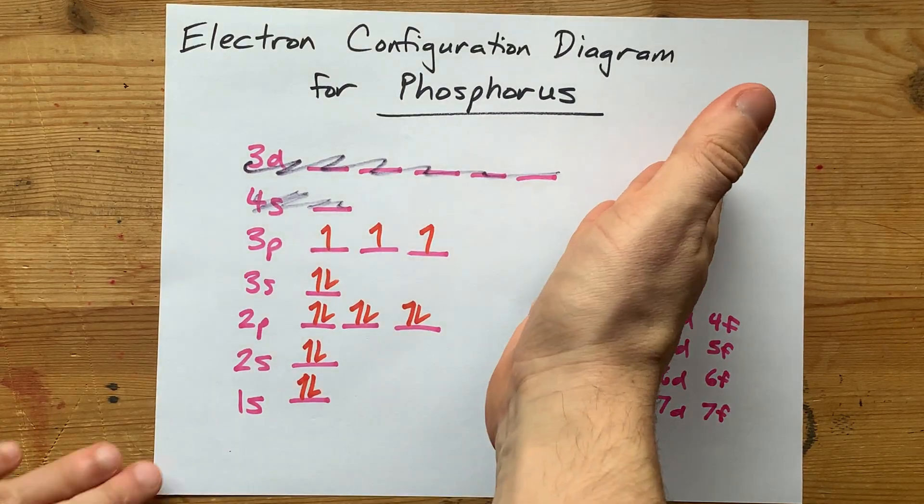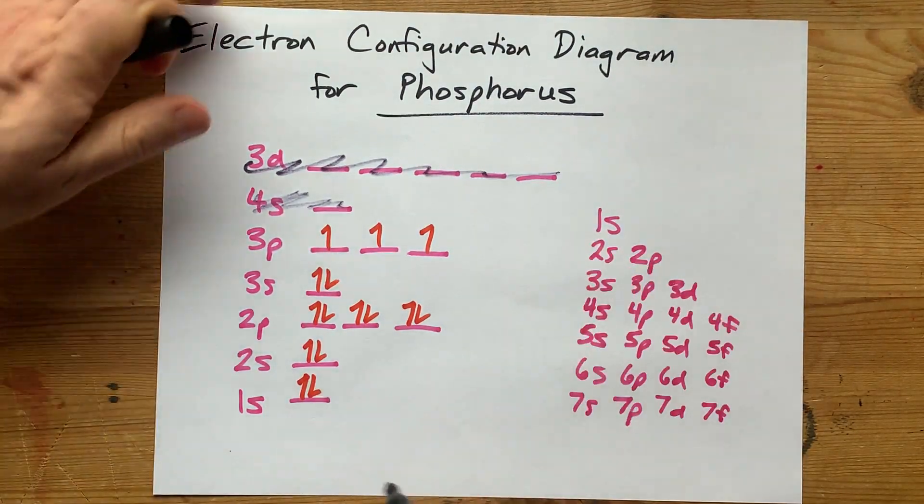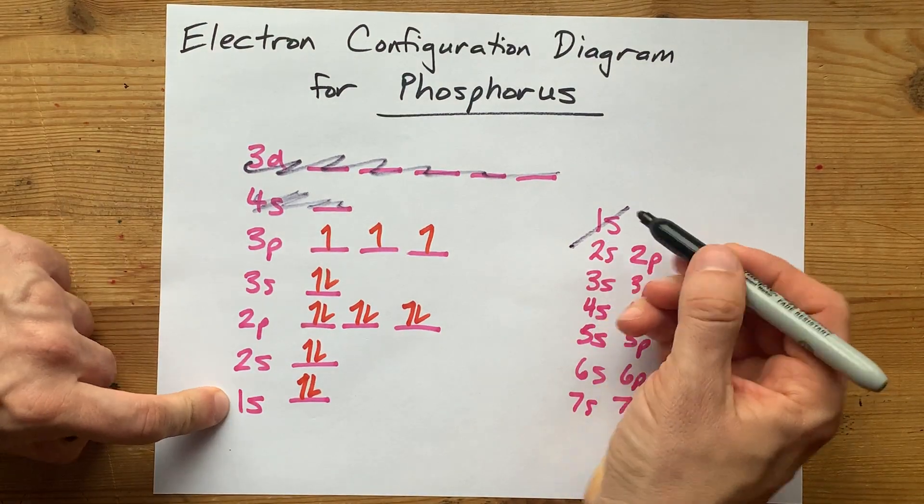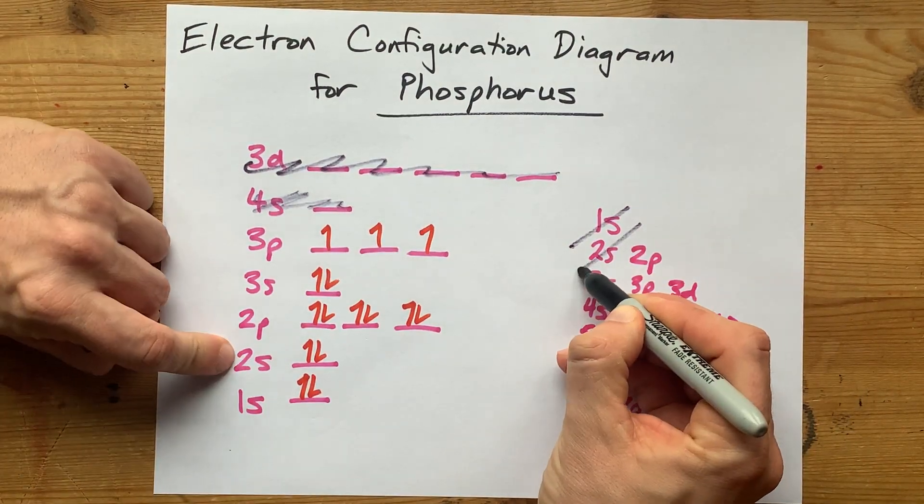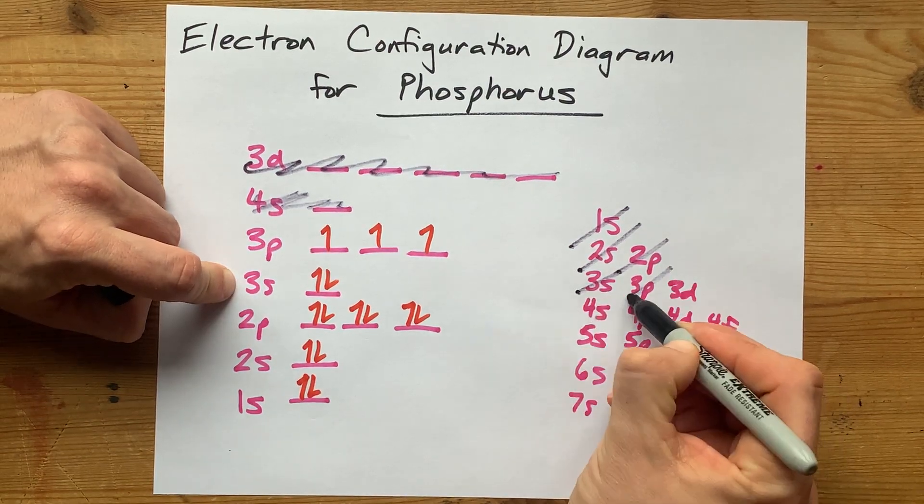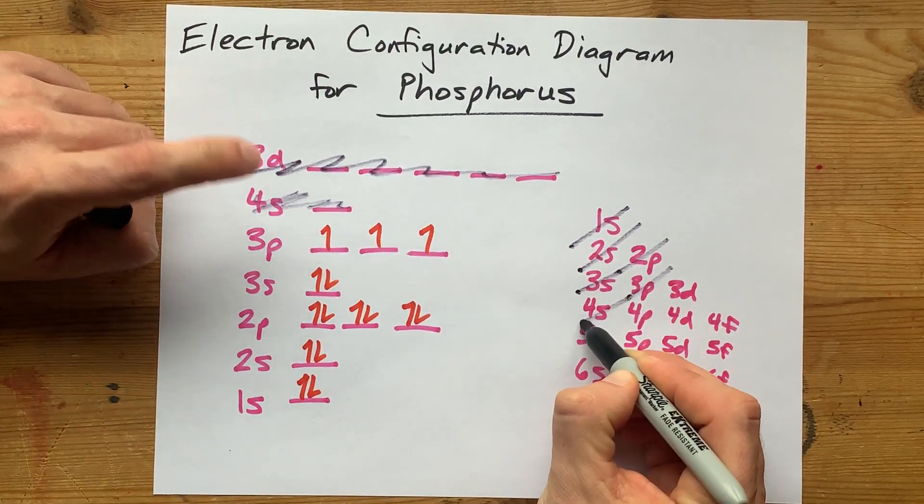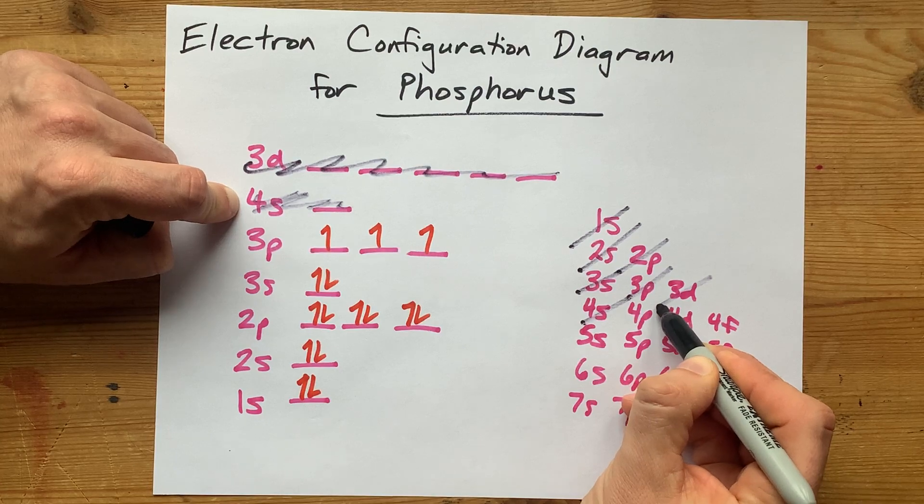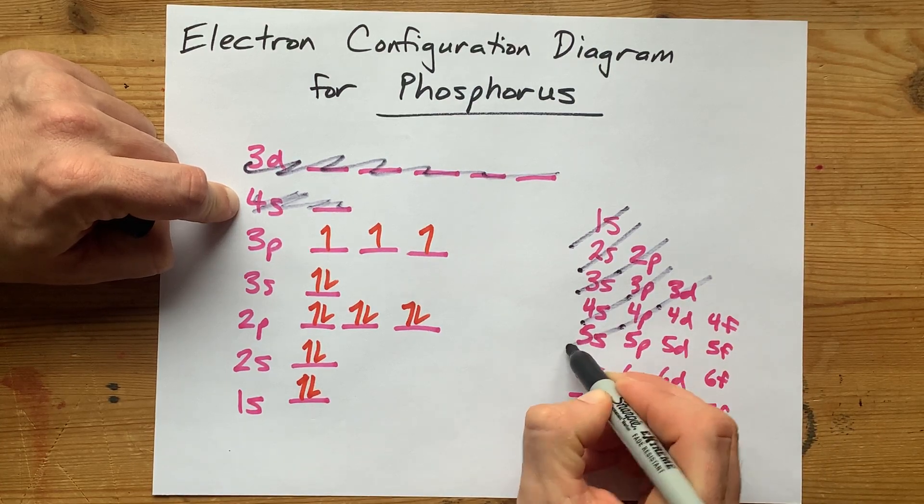And then draw diagonal lines through each of these. So you've got 1s, 2s, 2p, 3s, 3p, 4s, 3d, then 4p, then 5s.